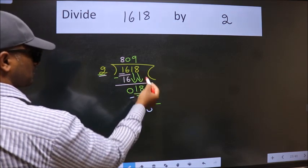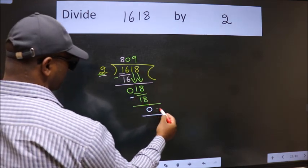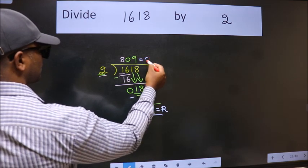No more numbers to bring it down, so we stop here. This is our remainder and this is our quotient.